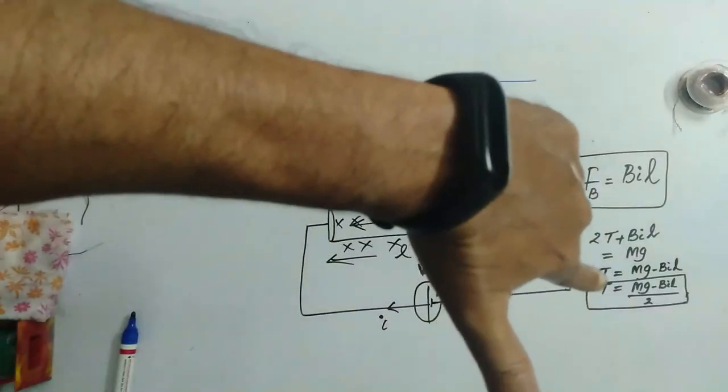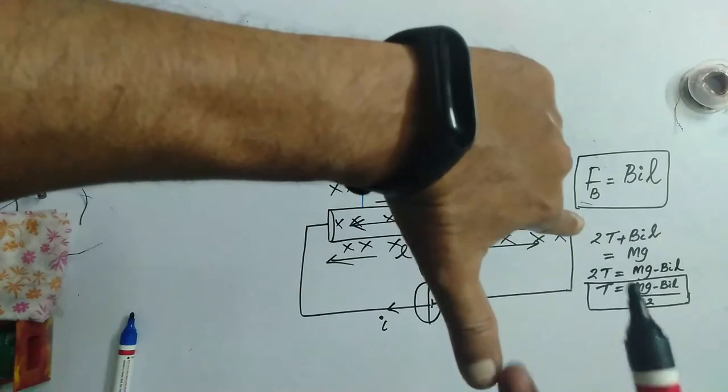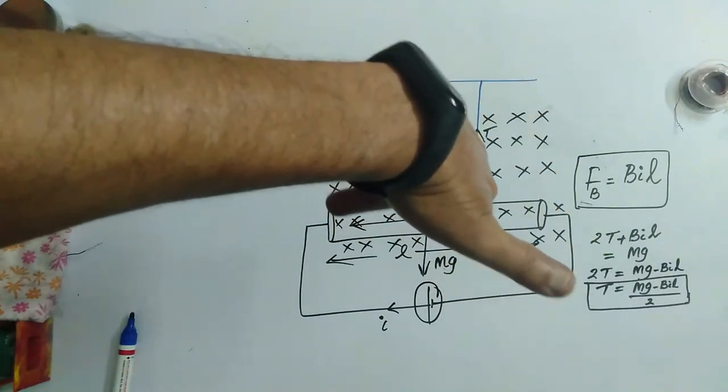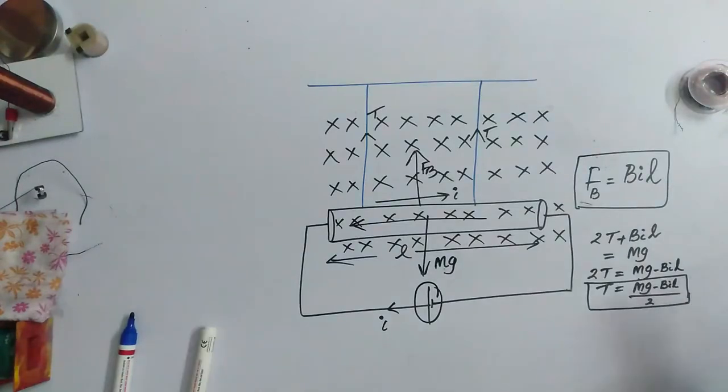So, therefore, the thumb is in the downward direction according to this situation. So, here I L cross B with the help of cross product also we can do.